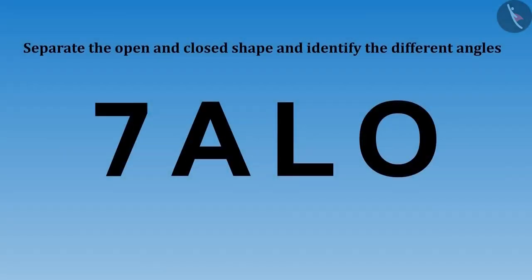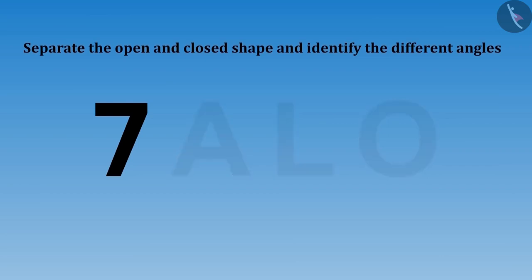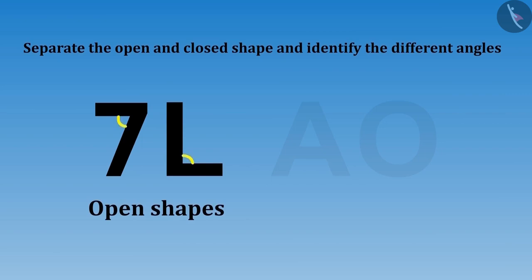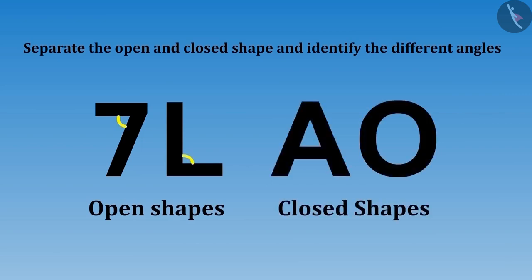Can you separate the open and closed shaped alphabets and identify the different angles in them? Yes sister, why not? I know to do this now. Here number 7 and the letter L are open shapes. They have one angle in them. A and O are closed figures. But alphabet A has several angles in it.